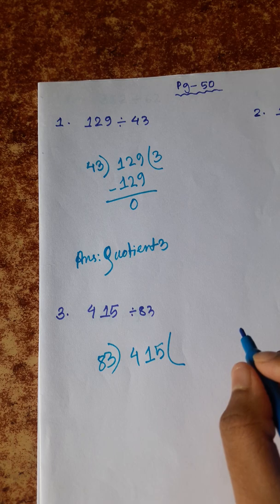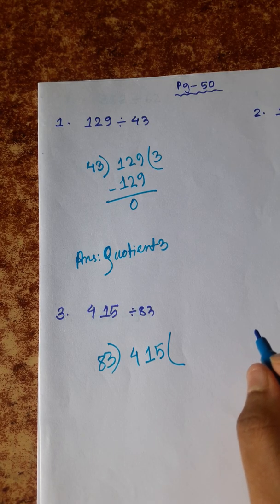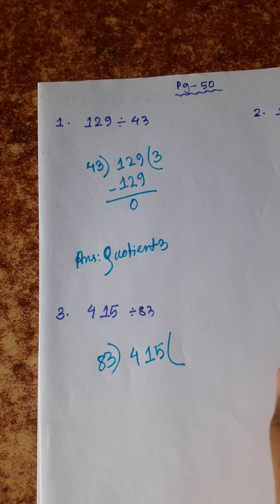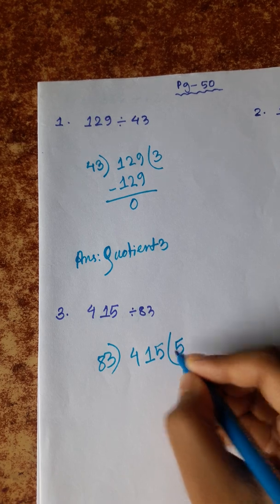83 ones are 83, 83 twos are 166, 83 threes are 249, 83 fours are 332, and 83 fives are 415.